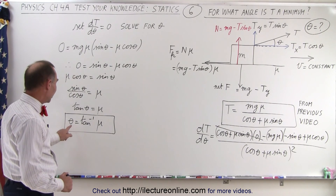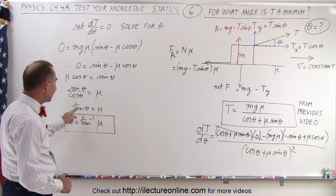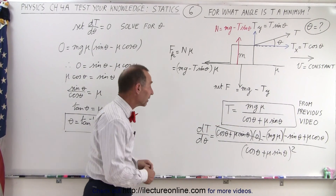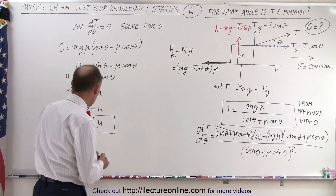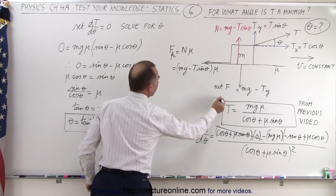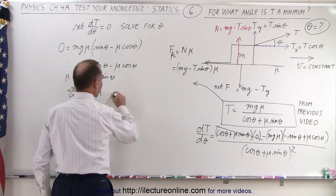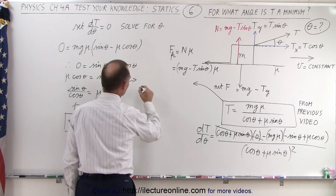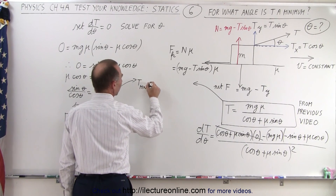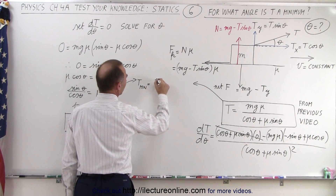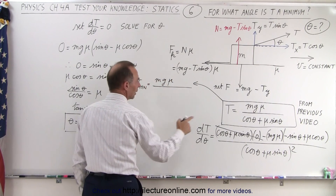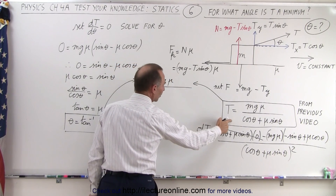Now that we have this, let's plug this value back into our equation, because we're going to calculate what that minimum tension is. We're going to combine both equations and see what we get. So T_min is equal to mg·mu divided by the cosine of theta.